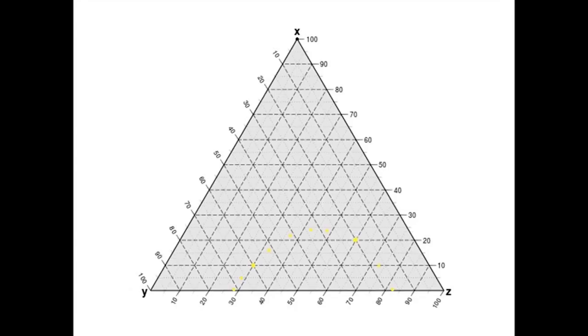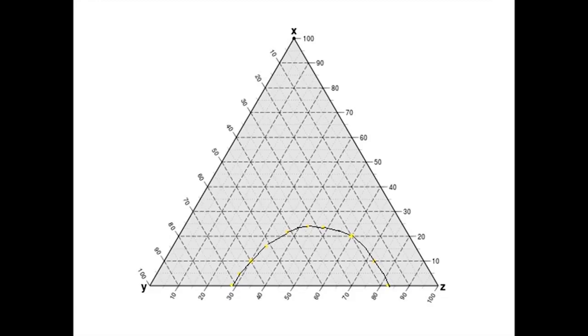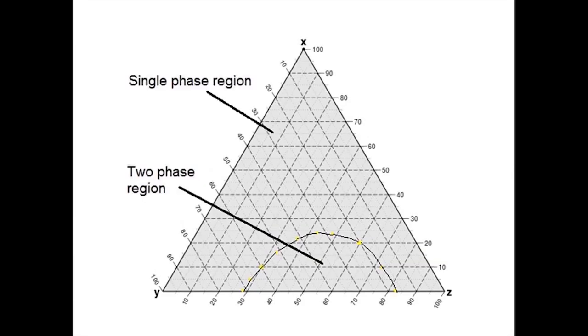When you have done your experiment, you will have all sorts of data points for the ternary system at different percentage compositions. Here are several separate data points plotted in yellow. And here is the curve that connects those data points. The dots represent the transition from one phase to two phases. The curve that connects the dots separates the single phase region of the plot from the two phase region of the plot. And that is how to plot data for a ternary system on triangular graph paper.